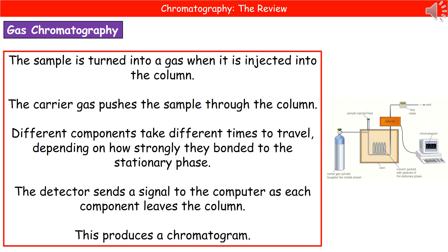In terms of how gas chromatography works, when you inject the sample, it's turned into a gas. That carrier gas that we've got in our cylinder pushes our sample through the column. And what we find is that depending on which components are present, they're going to take different times to travel through the stationary phase. And that all depends on how strongly they bond to the stationary phase.